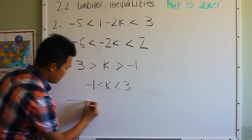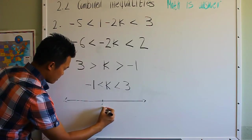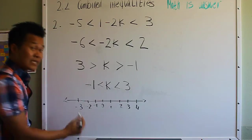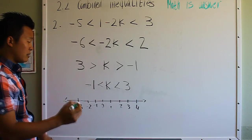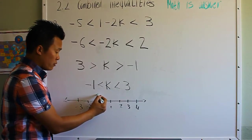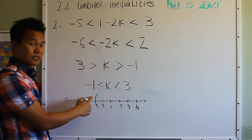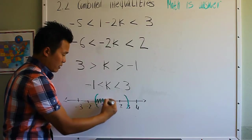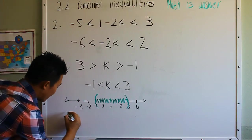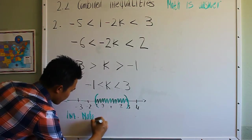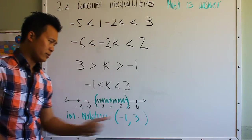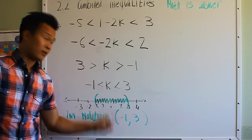Now we graph our solution on a number line with points including negative 3, negative 2, negative 1, 0, 1, 2, 3, 4. The solution is open at negative 1 and open at 3, so we use parentheses and shade everything between negative 1 and 3. Using interval notation, the solution is written as (negative 1, 3). It looks like an ordered pair but it's not — it's another way to show the solution instead of using inequality notation.